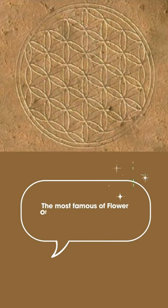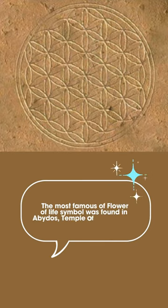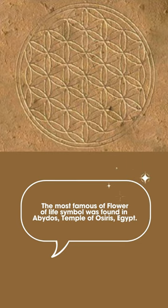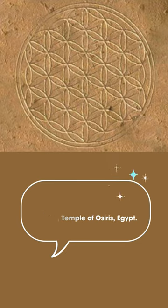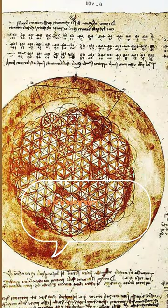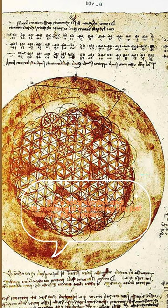The most famous Flower of Life symbol was found in Abydos, Temple of Osiris, Egypt. It is a solar symbol and its meaning is everlasting life, just like the never-ending pattern of overlapping circles.